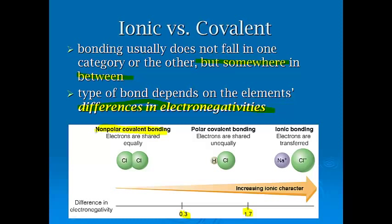When there's a small difference, nonpolar, the electrons are shared equally. Polar covalent is between 0.3 and 1.7. They're shared unequally, so someone's going to win the tug of war.